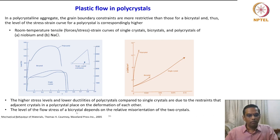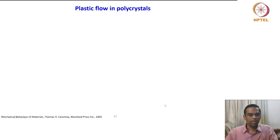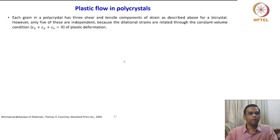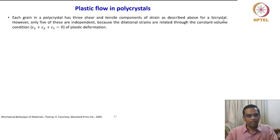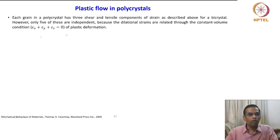The level of flow stress of a bicrystal depends on the relative misorientation of the two crystals, as nicely demonstrated. Each grain in a polycrystal has three shear and three tensile components of strain as described for a bicrystal. However, out of these six, only five are independent, because the dilational strains are related through the constant volume condition.